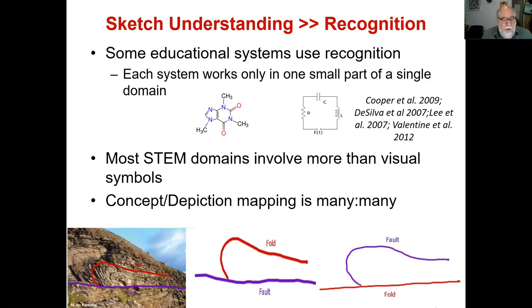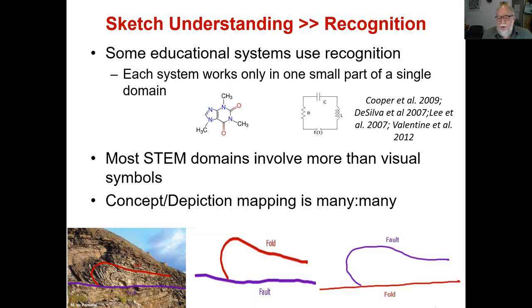The other thing you have to do, especially when dealing with students, is have them label what they draw. On the right, you see someone has labeled the fold, the fault, and so on. Even if they draw it correctly and you accurately match the shapes, if you don't know their intended meaning, you can't know if they actually understand what they drew.